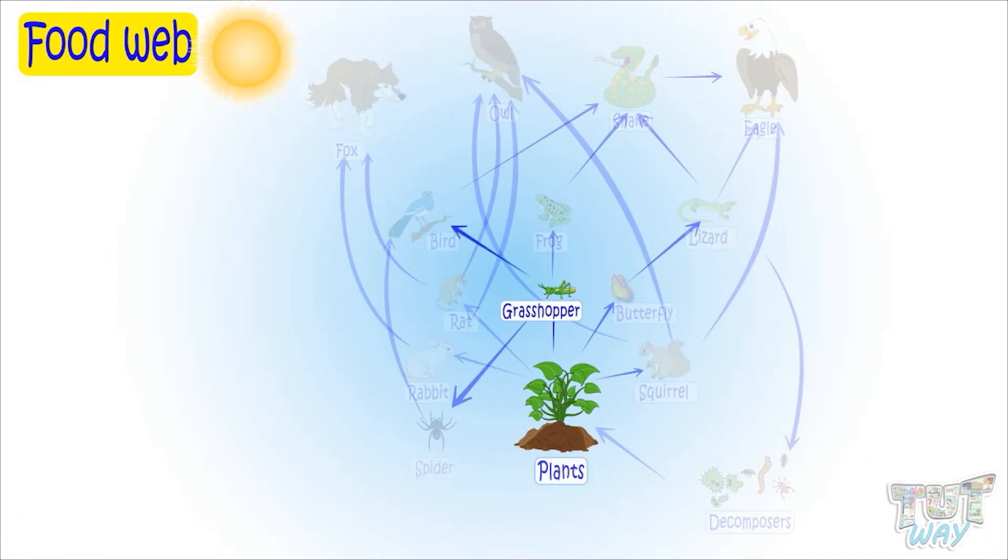Again, plants are eaten by grasshopper, grasshoppers by birds, birds by snake, and then snake by eagle. Like this, so many food chains are there. Next is plants, rats, owl, plants then squirrels and then owl, plants then rabbits and then owl.